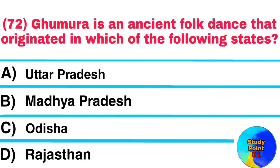Question No. 72. Ghumura is an ancient folk dance that originated in which of the following states? Answer: Orissa.